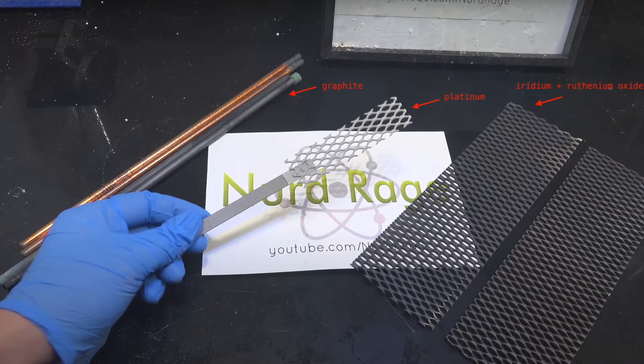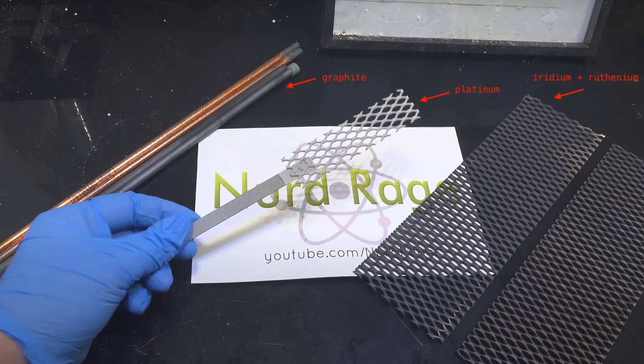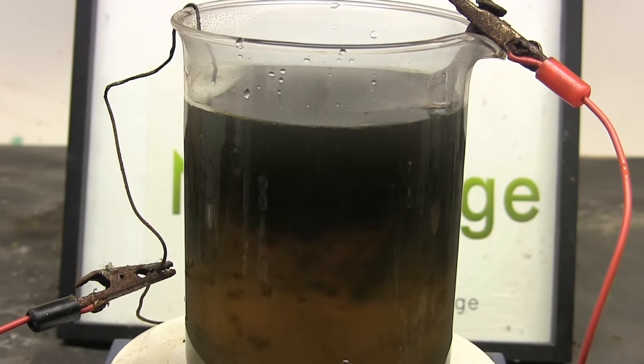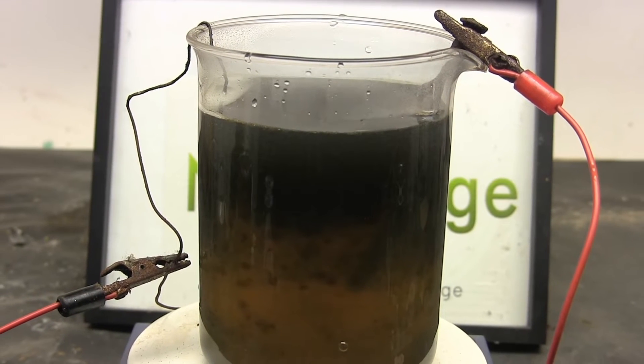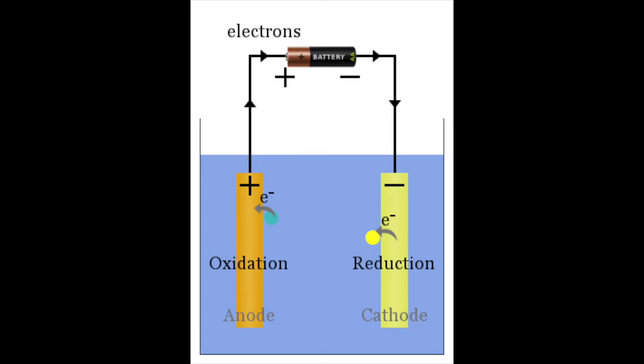However, in electrolysis, the electrodes must be inert in most cases, because otherwise it is very easy to react with the solution. This phenomenon is mostly observed on the anode, since it gives off electrons in the circuit.